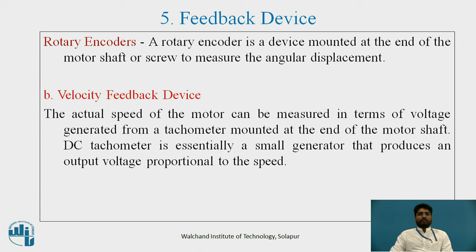A rotary encoder is a device mounted at the end of the motor shaft or screw to measure angular displacement. The second type of feedback is the velocity feedback device. The actual speed of the motor is measured in terms of voltage generated from a tachometer mounted at the end of the motor shaft. A DC tachometer is essentially a small generator that produces an output voltage proportional to the speed.